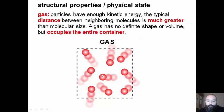Gas state substances have particles with enough kinetic energy. The typical distance between neighboring molecules is much greater than molecular size. A gas has no definite shape or volume but occupies the entire container.